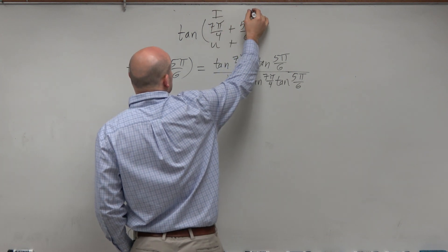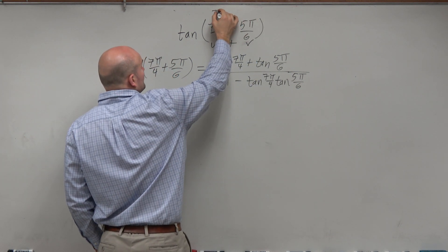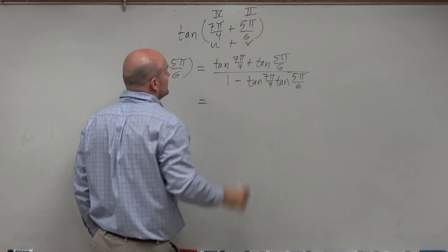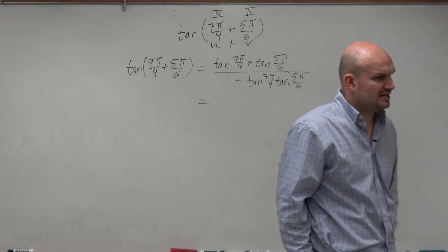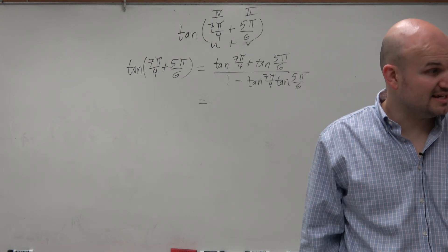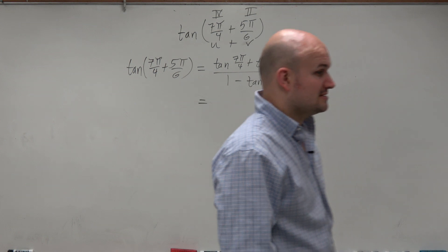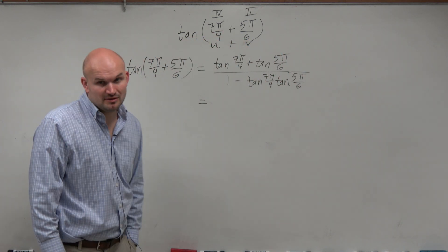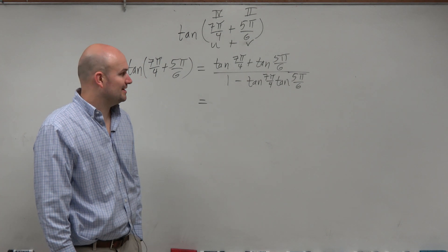7π over 4 is in the fourth quadrant and 5π over 6 is in the second quadrant. What do we know about tangent in the second and the fourth quadrant? It's negative. That's important. So all these values are going to be negative.